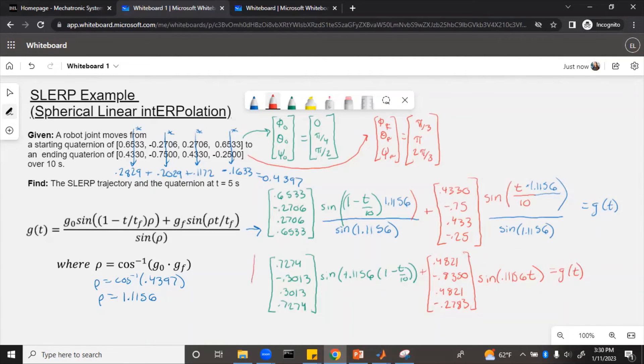So this is the answer for the g of t. You can see that it is going to come up with four different numbers or like a four by one matrix because of the four different parameters that are in a quaternion.